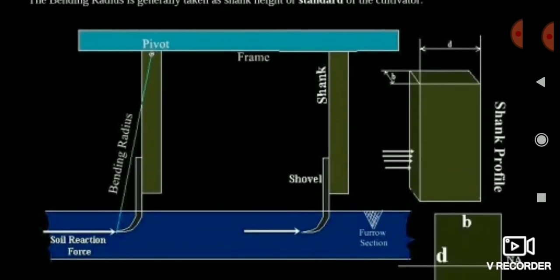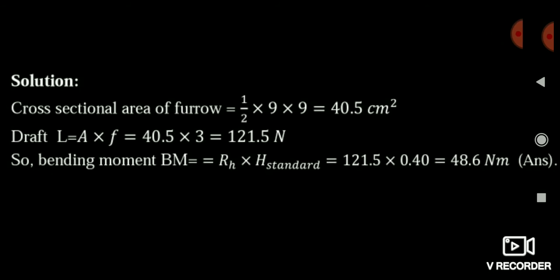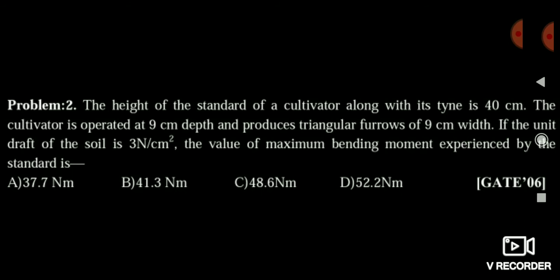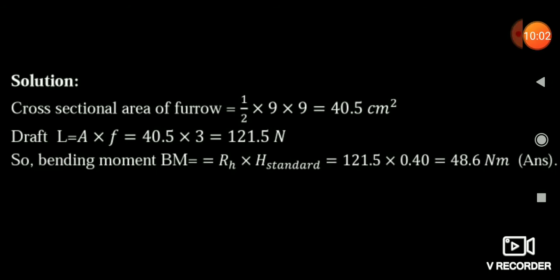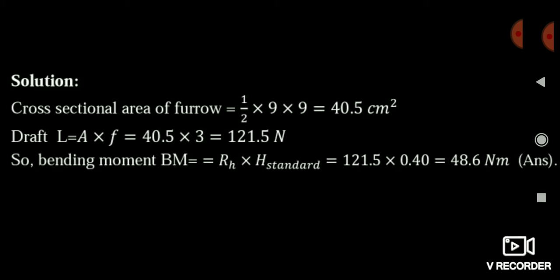You can see the diagram. The height of the standard and the unit draft (draft per unit area) are given, along with the width and depth of the furrow. First calculate the cross-sectional area from the 9 cm depth and 9 cm width. Then draft = unit draft × cross-sectional area = 3 N/cm² × area. Multiplying the draft by the sank height of 40 cm gives the bending moment, which comes out to 48 Nm.